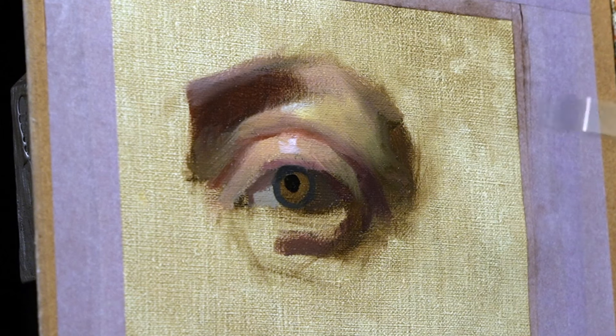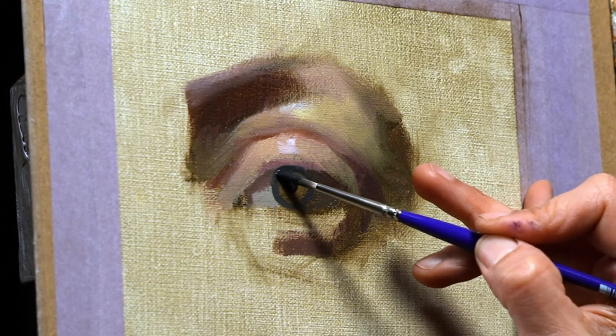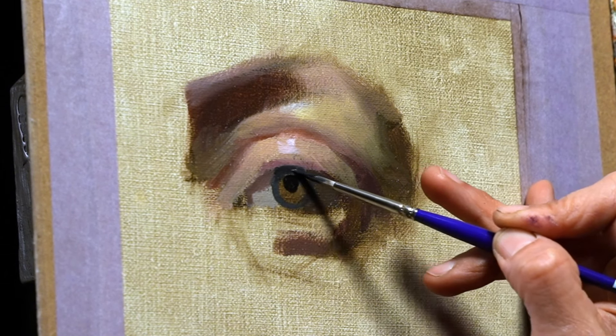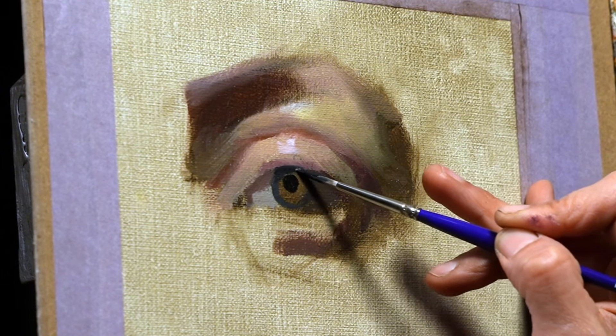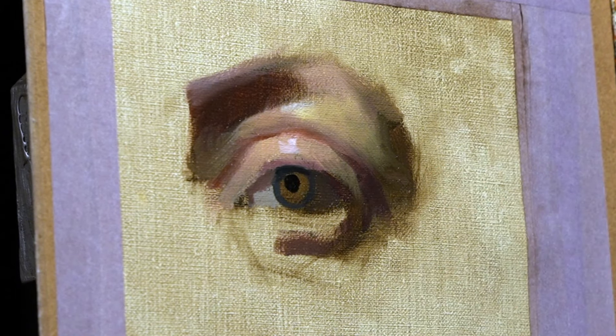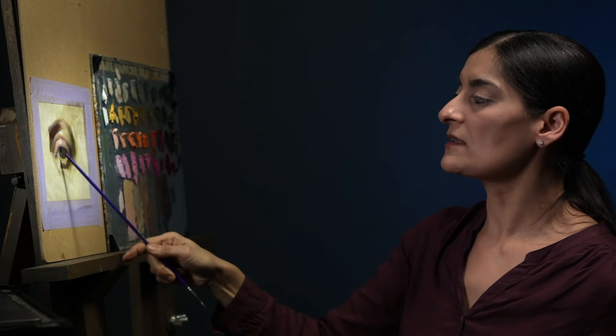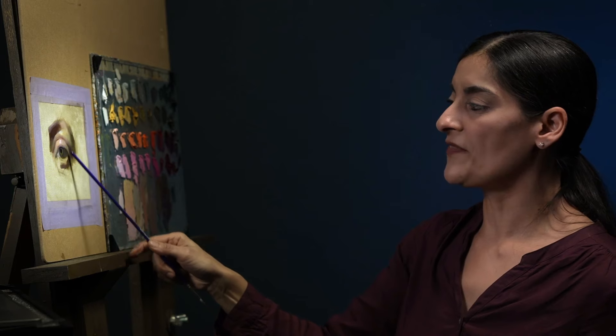There's a first value right underneath the top lid where the iris is, right about here. It gets quite dark in value. The iris itself functions a little differently than the orb of the eye or any sort of solid form.